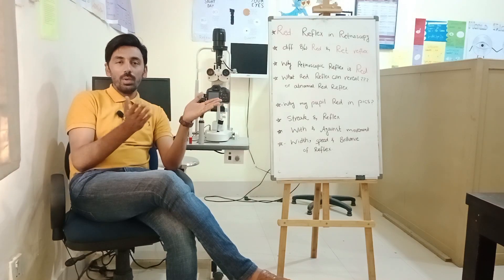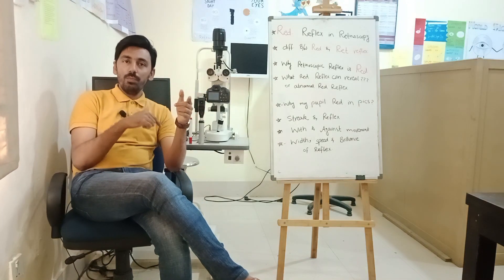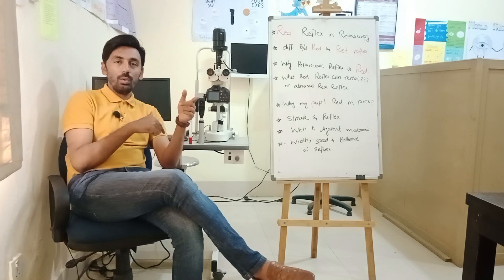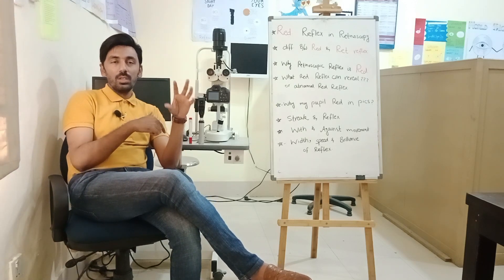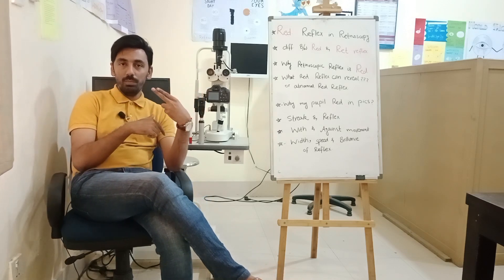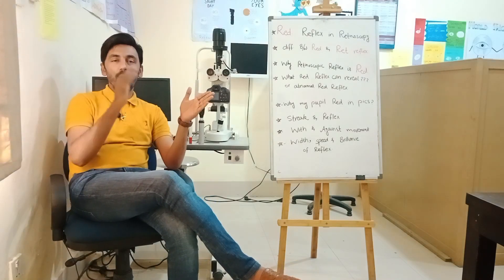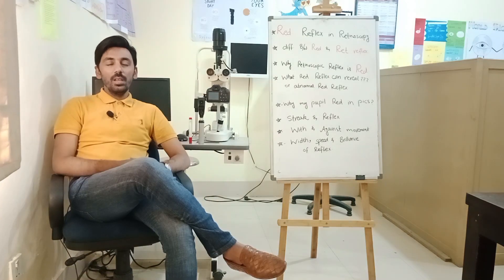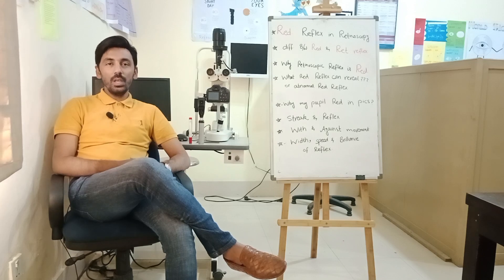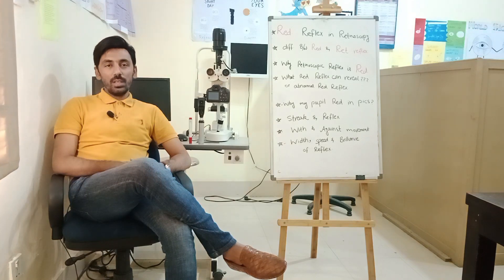In keratoconus — where the cornea has a cone-like shape — the reflex will appear scissor-like. A detailed video will be made on this topic. In the upcoming videos we will discuss straddling, skewing, and sweeping in retinoscopy. There is a lot more to cover regarding retinoscopy.